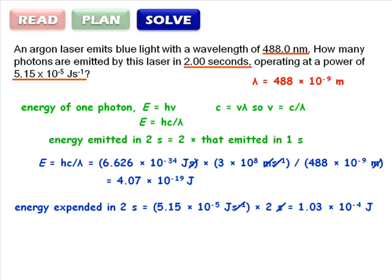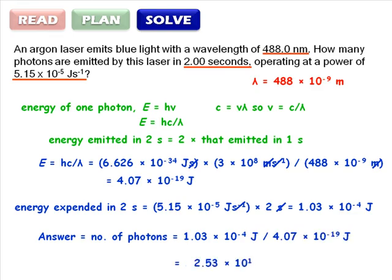To work out the number of photons we need, we simply divide the total energy by the energy of one photon. Answer? 2.53 times 10 to the 14 photons.